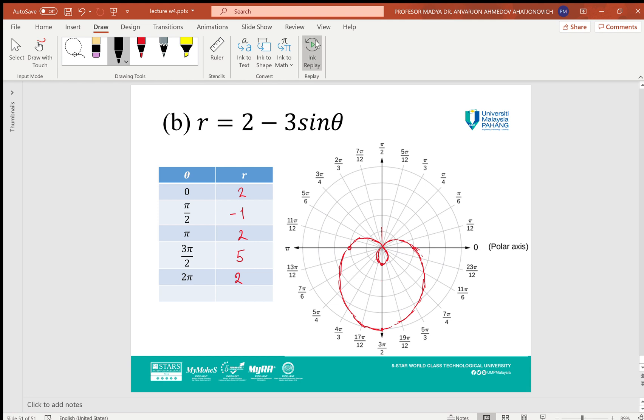Another one, we can make the table here: r = 2 - 3 sin θ. θ = 0, π/2, π, 3π/2, 2π. We can get R = 2, -1, 2, 5, 2. If you see a negative number, that means there's a loop. We plot the points.